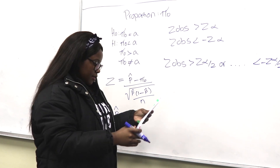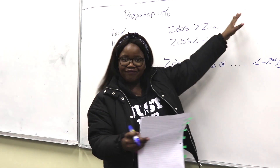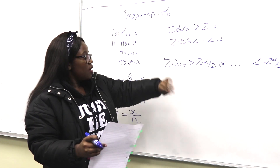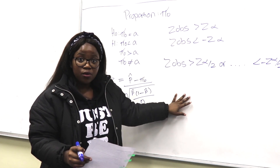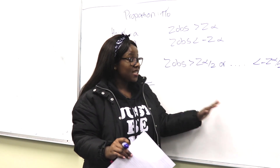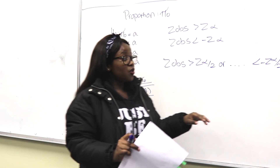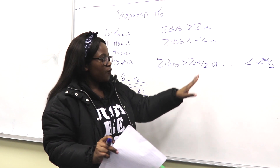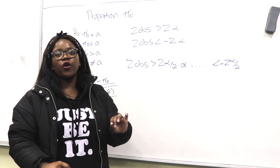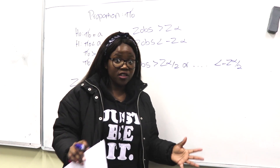For proportion, the rejection region, observed value, and p-value all follow the same pattern as the z distribution for the mean with given population variance. Remember, the z-table always works with less-than values, so follow the same steps. The conclusion always goes back to how the question was framed and what it was asking you.